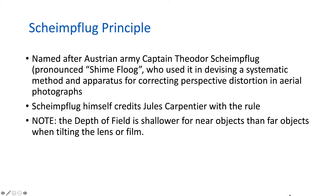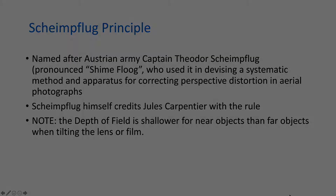Normally, we think of everything a certain distance in front of and behind the plane of focus as being within focus according to the depth of field. But in this case, since we've tilted everything, those two boundary lines of what's in focus are no longer parallel — instead they're wedge-shaped. Objects near the camera will have a much shallower depth of field than objects far away.